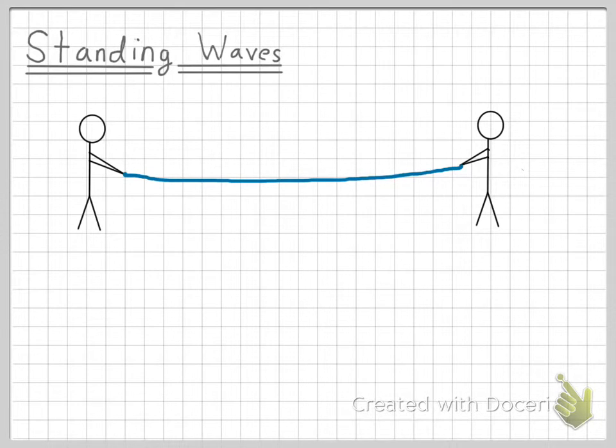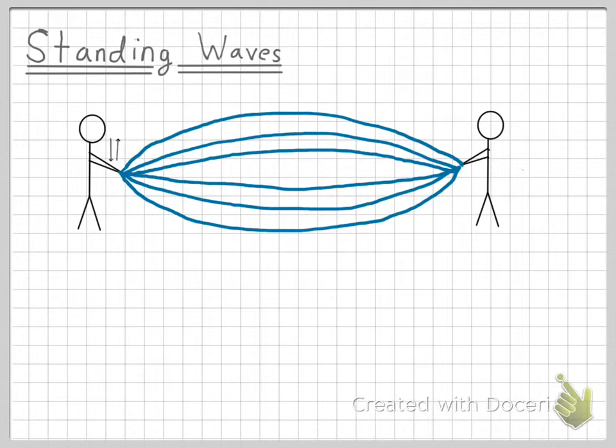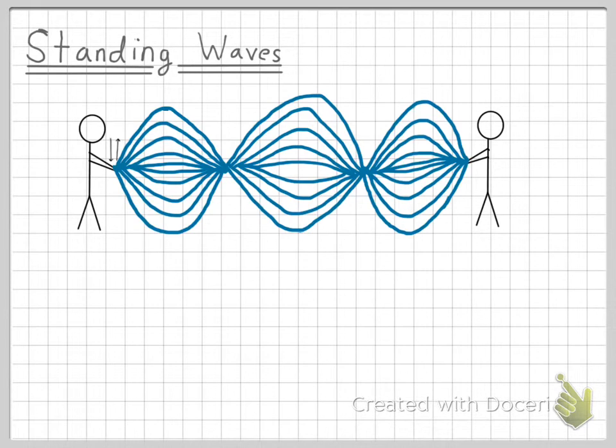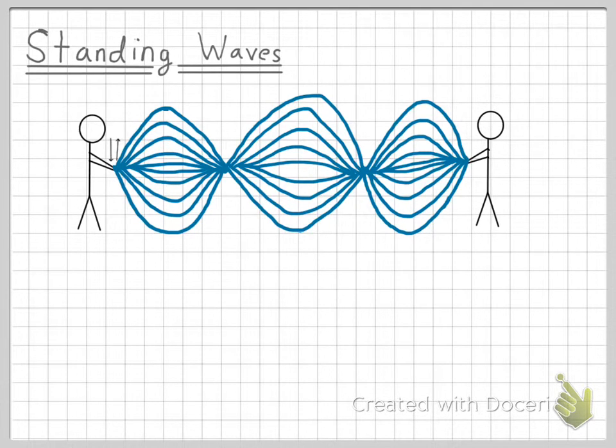But if one person rapidly begins to move their arms up and down, a motion at first will seem kind of chaotic, but eventually a point will be reached where the slinky seems to move in an organized way, which would look like this. And if the person starts to move their hands faster, it would begin to look like this, and even faster, it would begin to look like this.